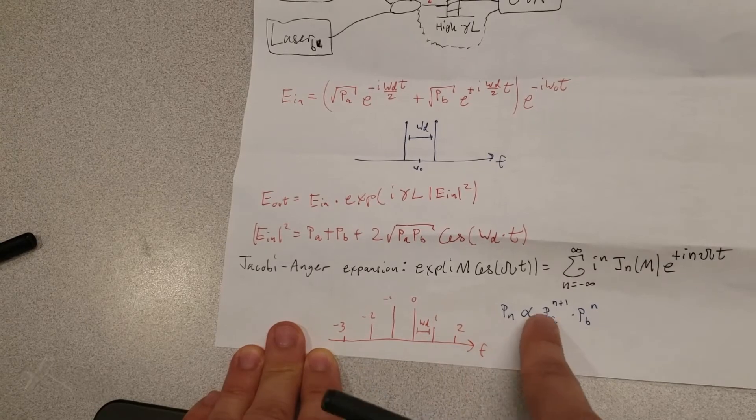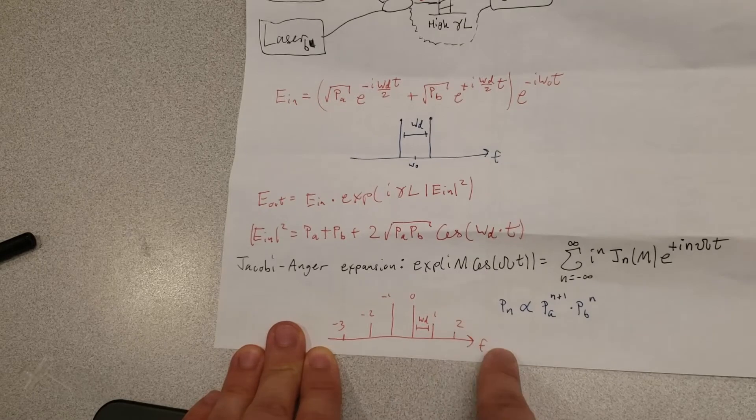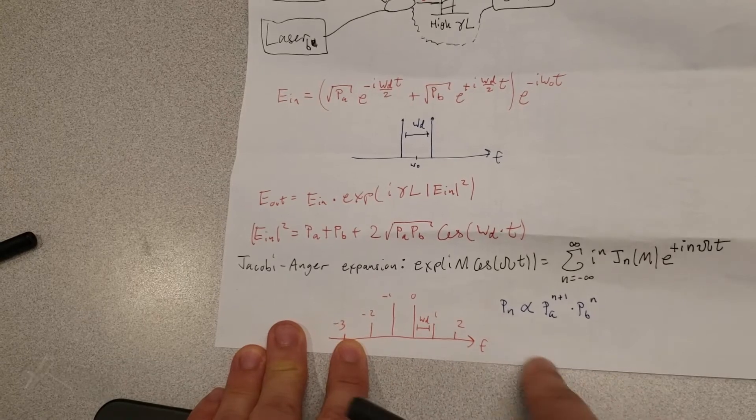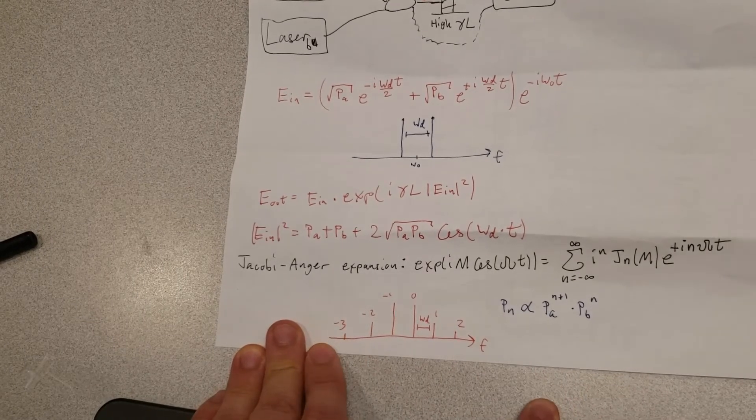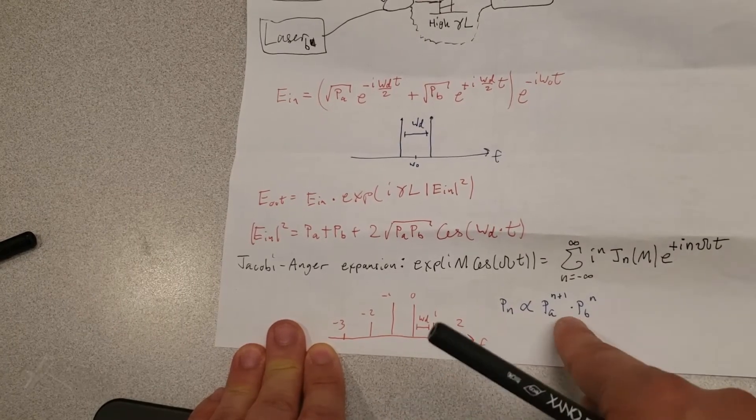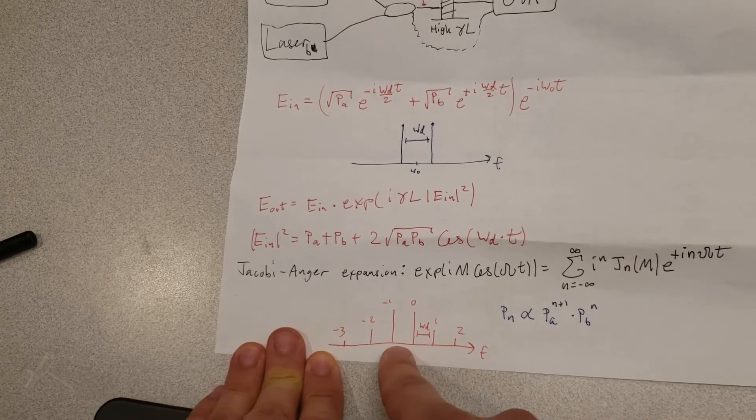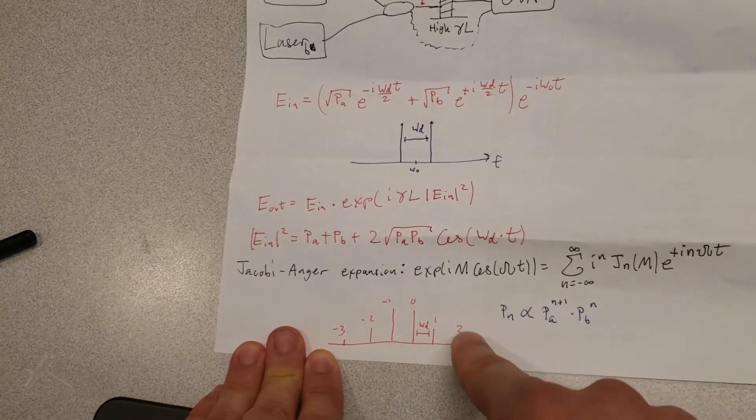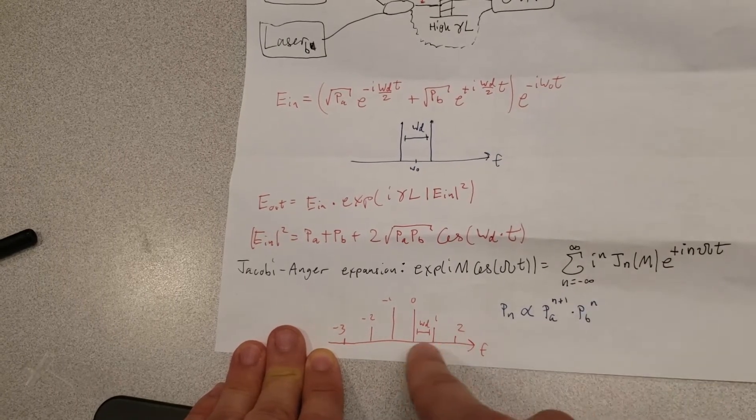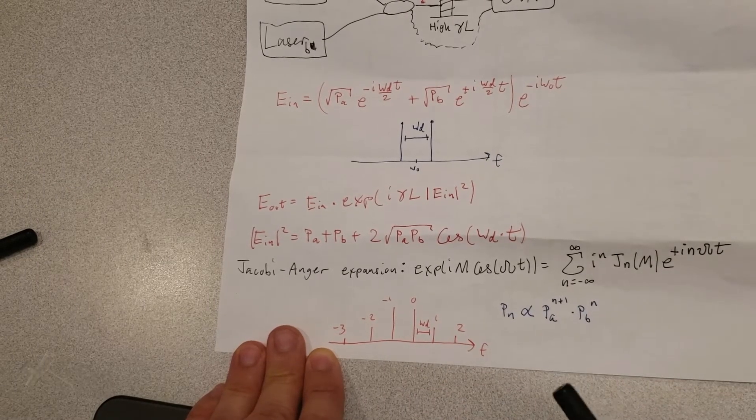What happens is that as you increase the powers of the input lasers, these sidebands are going to grow stronger and you'll get more and more of them. In principle there's an infinite number of sidebands stretching in the positive and negative directions, but the higher order ones are too weak to actually detect. The power of the nth order sideband is proportional to integer powers of the input lasers. If you change the power of the input lasers, higher order sidebands will respond much more strongly, which can be used for interesting signal processing as I explore in my thesis.